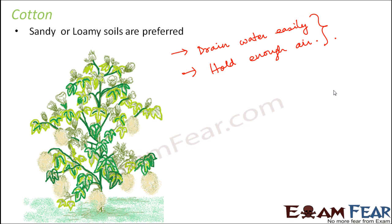So obviously we are talking about sandy soils. Loamy soils are generally preferred by most plants because they are intermediate — they allow water to drain, hold air, and also retain some water, being a mix of sandy and clay soils. But if you talk about more specific preference, a cotton plant would give more preference to sandy soils.